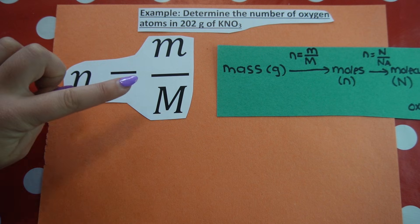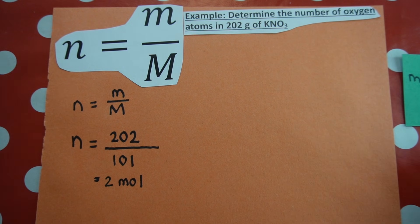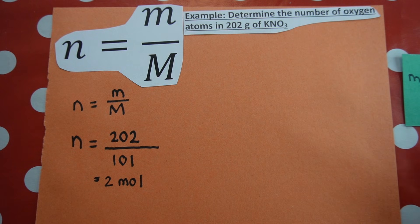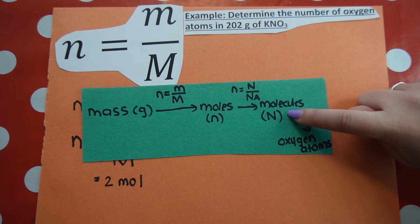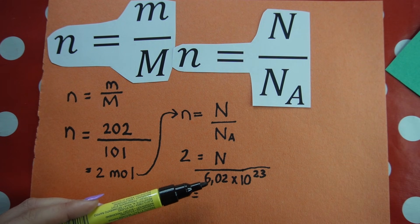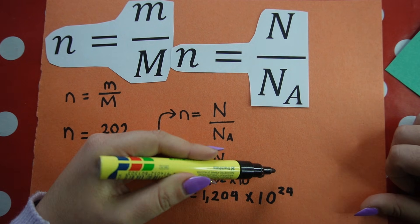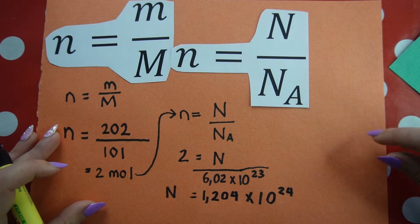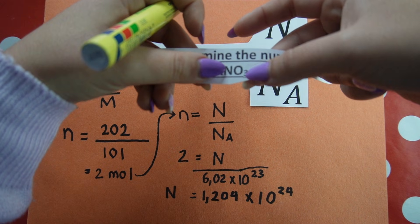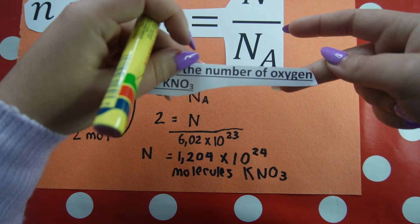Step 1: use 202 grams to calculate number of moles. How did I get molar mass big M? By adding up the atomic masses of potassium nitrate. That gives us number of moles. Step 2: convert moles to molecules using the second formula. Substituting number of moles in place of N and using Avogadro's number as a constant — 2 multiplied by Avogadro's number gives 1.204 times 10 to the 24. Remember, this is the number of potassium nitrate molecules. One molecule of potassium nitrate has 5 atoms total, but the question asks specifically for oxygen atoms.